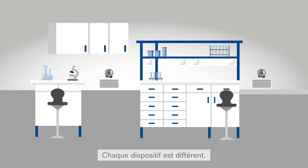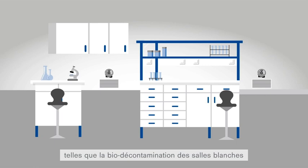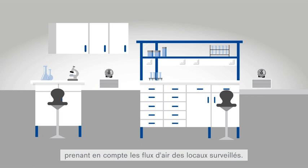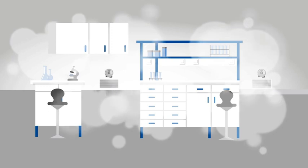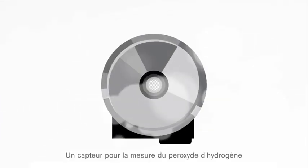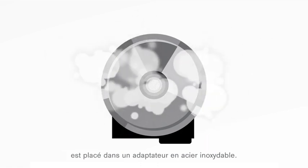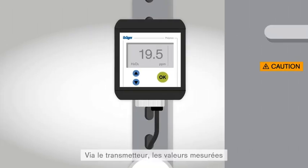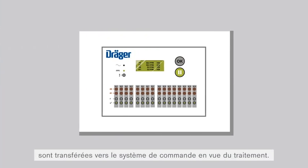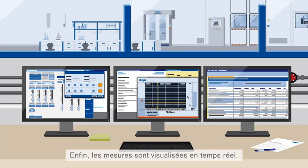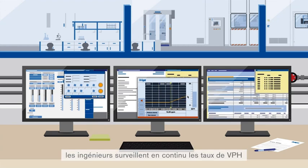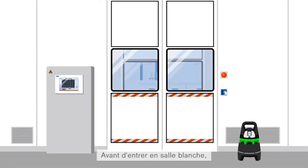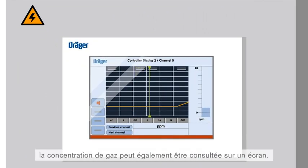Each deployment scenario is different, but there are established solutions. One example is the bio-decontamination of clean rooms by installing a stationary gas detection system that takes local air currents into account, eliminating contaminants throughout the entire clean room. A sensor for measuring hydrogen peroxide is installed in a stainless steel adapter, ensuring a defined measurement environment. The measured values, via a transmitter, are transferred to a controller for processing. Finally, the measurements are visualized — in the technical control room, engineers can always view the hydrogen peroxide concentration and respond to an alarm immediately. Right before entering the clean room, the gas concentration can also be viewed on a monitor.